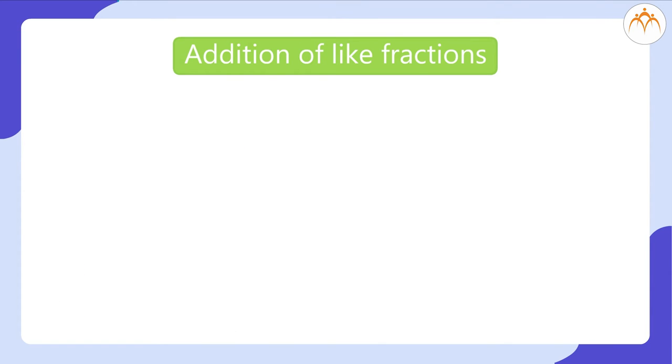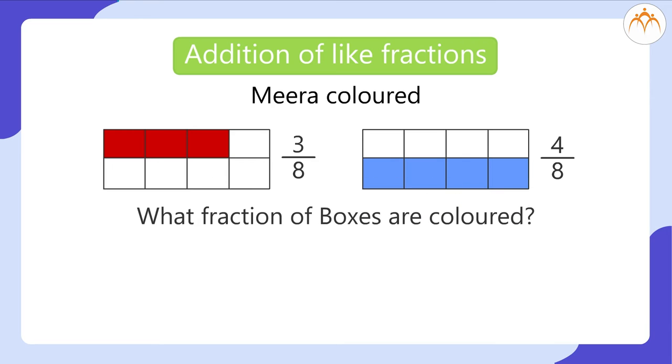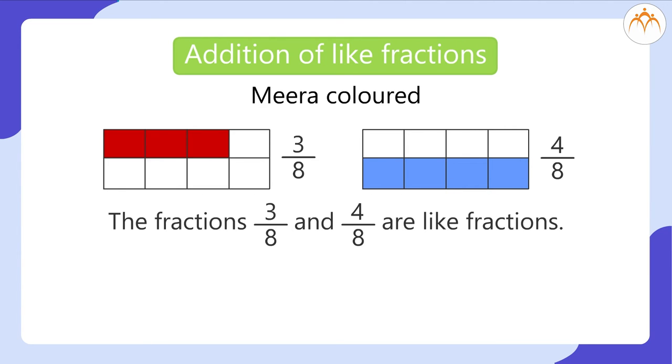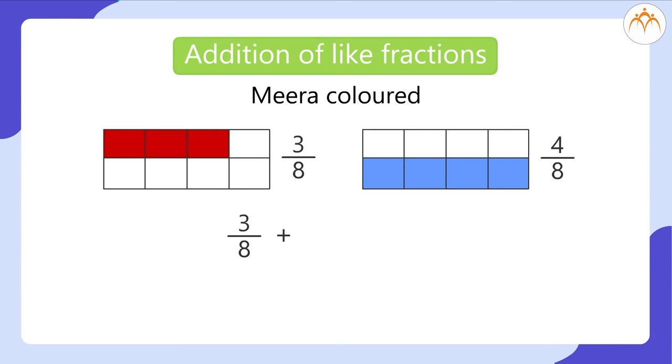Addition of like fractions. Mira colored 3 by 8 of the boxes red and 4 by 8 of the boxes blue. What fraction of boxes are colored? The fractions 3 by 8 and 4 by 8 are like fractions. To add like fractions, we add the numerators and copy the denominators. 3 by 8 plus 4 by 8 is equal to 3 plus 4 by 8, is equal to 7 by 8.